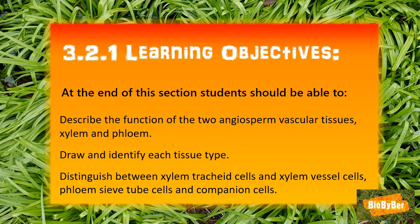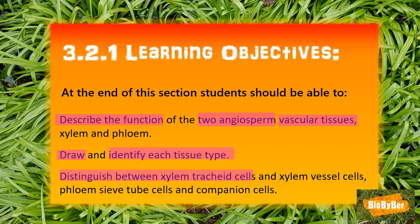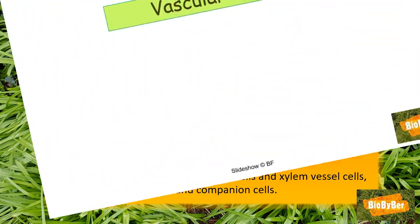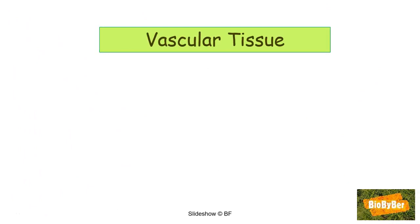What does this mean — what are we actually trying to learn? You need to be able to describe the function of vascular or transport tissue in a flowering plant or angiosperms, draw and identify each tissue type, and distinguish between xylem tracheid cells and xylem vessel cells, and between phloem sieve tube cells and companion cells.